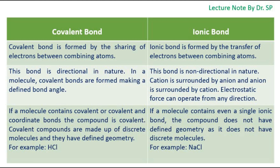If a molecule contains even a single ionic bond, the compound does not have defined geometry as it does not have discrete molecules. For example, the bond in sodium chloride — the bond between sodium and chlorine is an ionic bond.